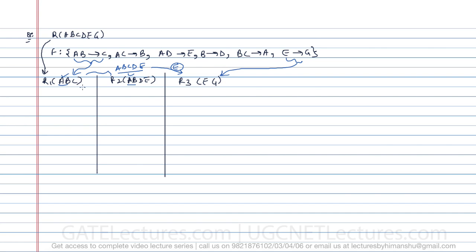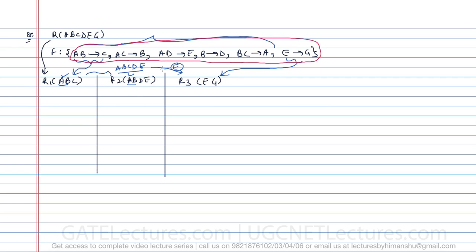Now, before finding additional functional dependencies, let us check whether we can divide the original functional dependencies into these tables as they are, without adding any additional functional dependency. If we can divide them as-is, then we can say it is functional dependency preserving, because after taking the union we will get the original set. This is a kind of shortcut that comes with practice.